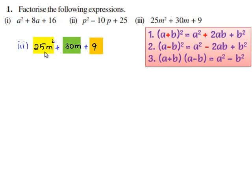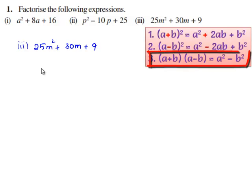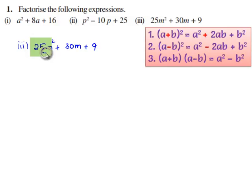We observe that the given expression has three terms. Therefore, the third identity is not applicable. We also observe that the first term of the expression is a perfect square and the third term of the expression is a perfect square with a positive sign for the middle term.